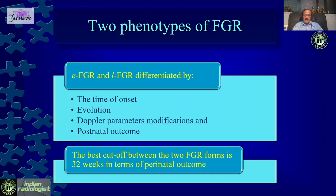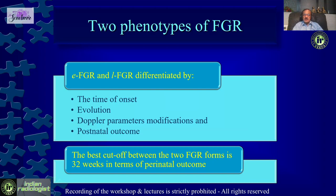We need to differentiate between two phenotypes of FGR: early onset FGR and late onset FGR. It is very important to differentiate between them because both behave differently as far as outcome and prognosis are concerned. This difference is based on the time of onset or when you diagnose. For all practical purposes, we now take 32 weeks gestation as the cutoff — if picked up before 32 weeks, it is early onset; if picked up after 32 weeks, it is late onset FGR.